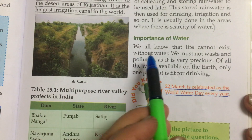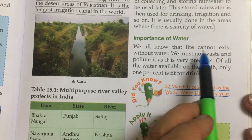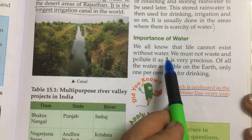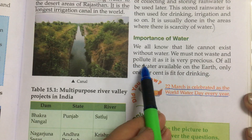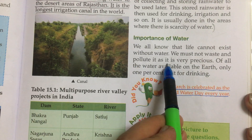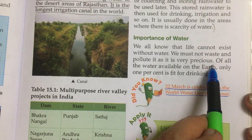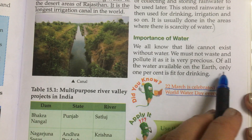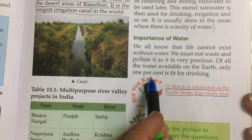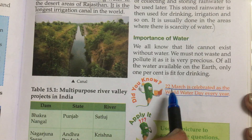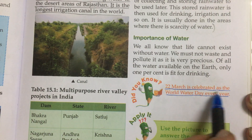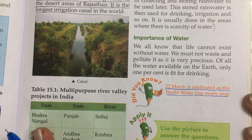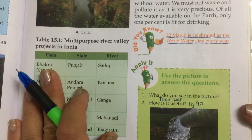Importance of water: we all know that life cannot exist without water. We must not waste and pollute it as it is very precious. Of all the water available on the earth, only 1% is fit for drinking. 22nd March is celebrated as World Water Day every year.